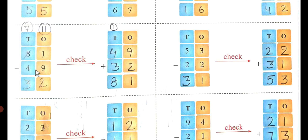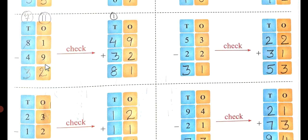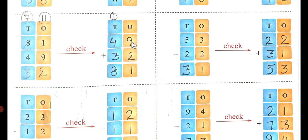Now 81 minus 39: 9 cannot be subtracted from 1, so 8 gives 1 number here, it becomes 11. 11 minus 9 is 2, and 8 is reduced to 7. 7 minus 3 is 4. Answer is 42. To check, write 39 above and 42 below: 9 plus 2 is 11, carry 1. 4 plus 3 is 7, plus 1 is 8. We get 81 — the answer is correct.